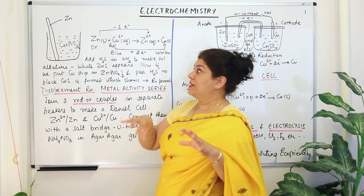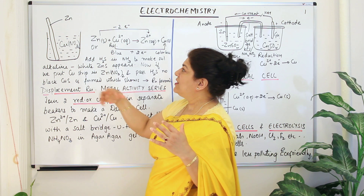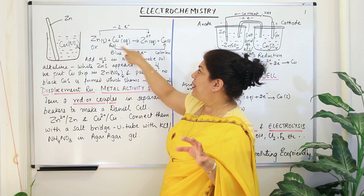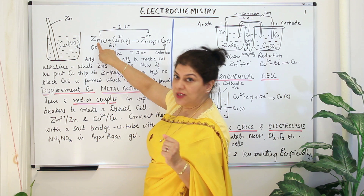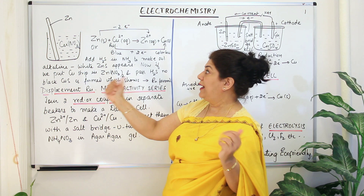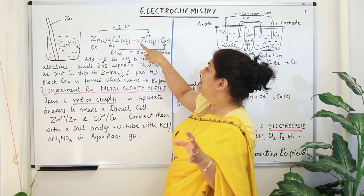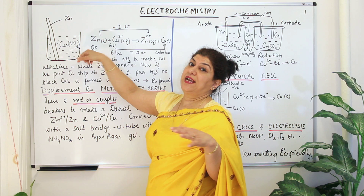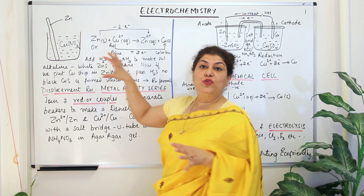Copper starts getting deposited while the zinc rod gets dissolved little by little as it displaces the copper from the copper nitrate solution. Zinc, which was neutral and solid, reacted with copper nitrate. The copper ions were displaced — two electrons from zinc went to copper, copper became neutral solid copper, and zinc formed the zinc ion, taking the place of copper so the salt solution is now zinc nitrate.